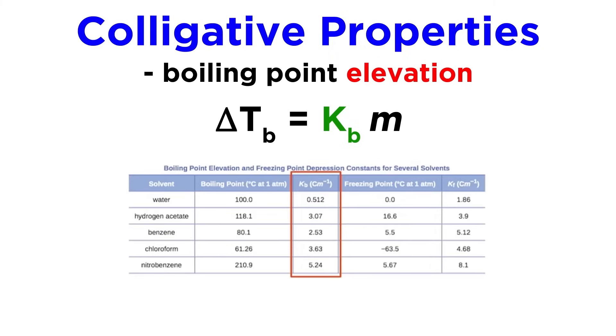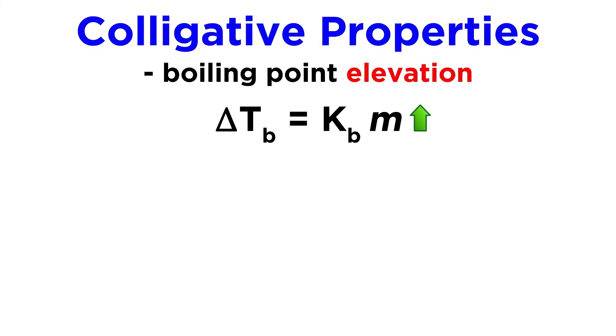Here are some Kb values, including one for water, which will be commonly used. We can clearly see that as molality increases, the boiling point elevation will increase.